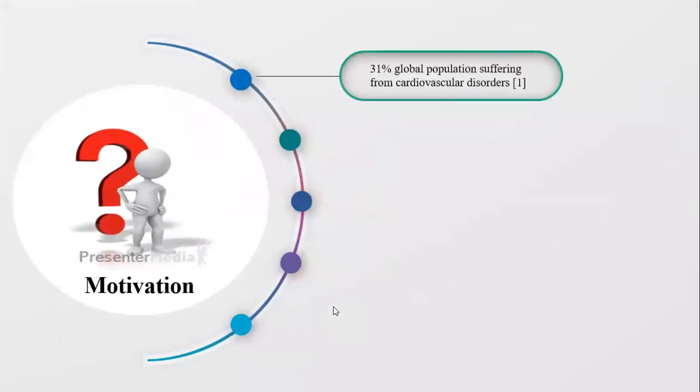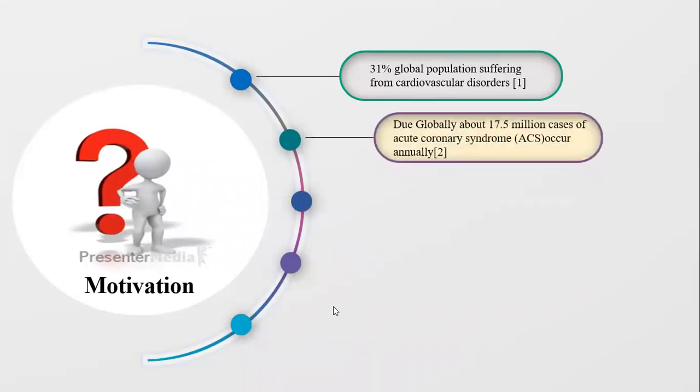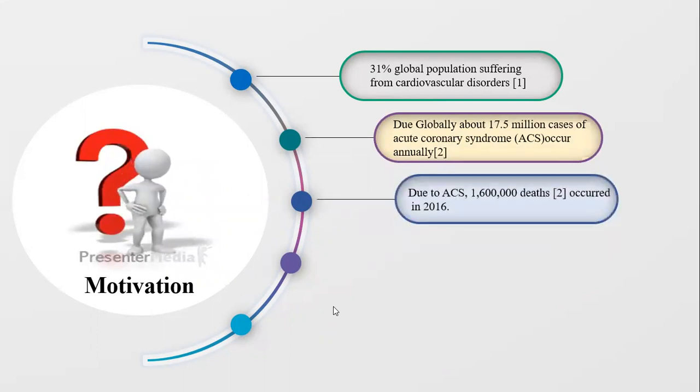Motivation. Around the globe, about 31% of the people are currently suffering from cardiovascular disorders. Particularly, acute coronary syndrome is the most prominent one in maintaining high mortality rate, and its incidence and prevalence is increasing rapidly. According to research statistics, about 17.5 million cases are reported annually. ACS resulted in 1.6 million deaths in 2016.